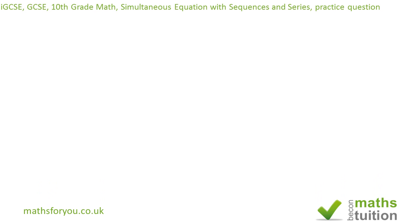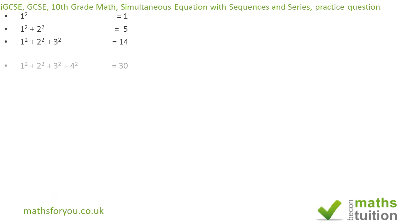Well, hello and welcome to this exercise on simultaneous equations with series — an IGCSE question. It goes like this: 1 squared is 1; 1 squared plus 2 squared is 5; 1 squared plus 2 squared plus 3 squared is 14; and 1 squared plus 2 squared plus 3 squared plus 4 squared is equal to 30.